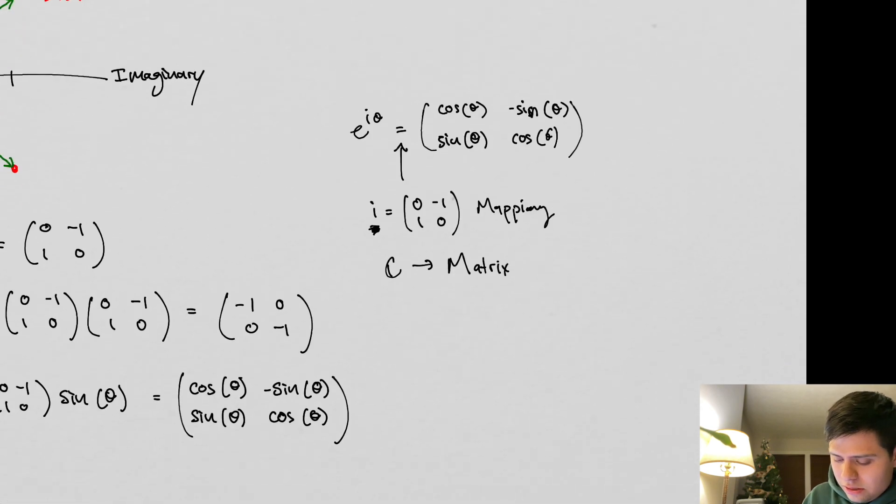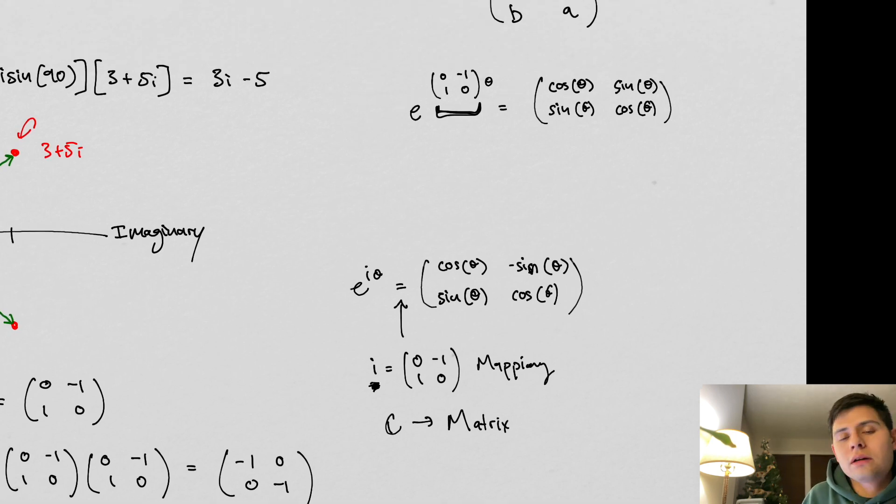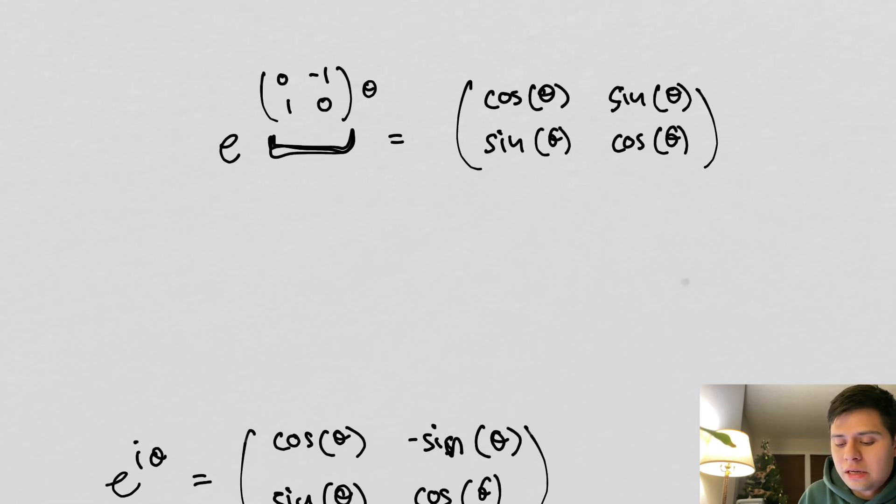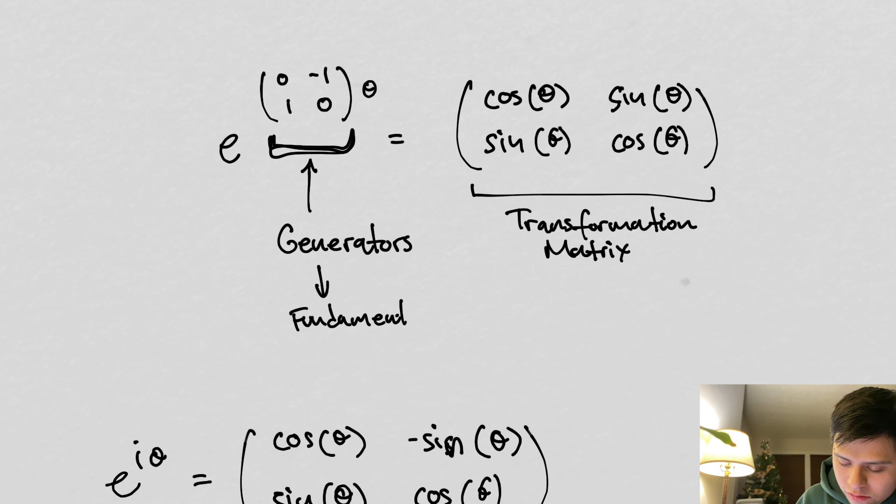We have this mapping, putting it in an exponential. This thing we're going to call a generator. This is key: this mapping that we did, this matrix right here is arbitrary. There's nothing stopping us from trying to think up of another matrix. The enterprise of this book or playlist is to try to understand what the ensemble of these matrices are like. We're going to call them generators.